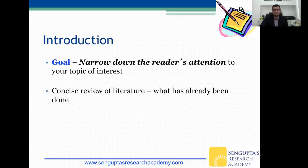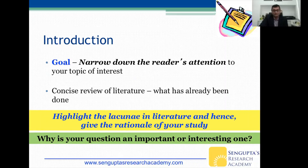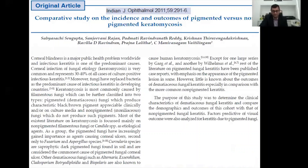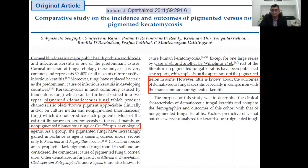For the introduction, the goal is to narrow down the reader's attention to your topic of interest. It should be a concise review of what has already been done, then highlight the lacunae in the literature to give a rationale for the study, and explain why your question is important or interesting. For example, one of our papers on pigmented versus non-pigmented keratomycosis starts with corneal blindness, moves to pigmented and filamentous fungi, notes what is known about each, and then states: 'However, little is known about the outcomes of dematiaceous fungal keratitis, especially in comparison with the more common non-pigmented keratitis' — and therefore states the purpose of the study.